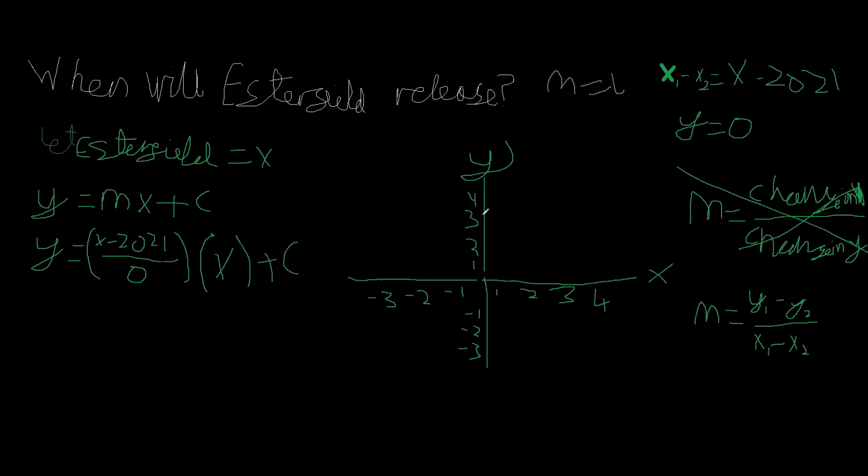C is the y-intercept, i.e. the point where the y will intercept. For common purposes, we're going to make this number zero. So we get the conclusion that x minus 2021 over zero times by x.